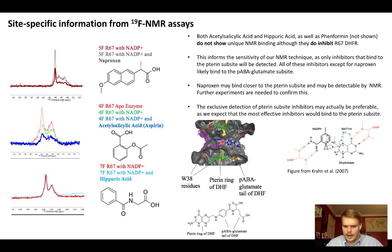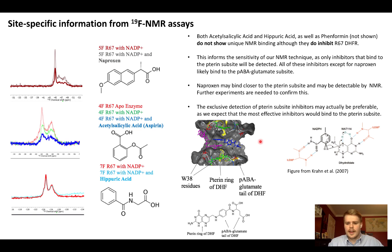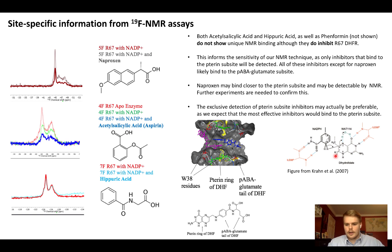The key takeaway is that this NMR method will detect inhibitors in drug screening, but only inhibitors that bind to the pterin sub-site. This could actually be viewed as a positive, because we suspect that inhibitors binding to the pterin sub-site will be better inhibitors. This is due to the isoleucine 68 hydrogen bonding interactions, which have been found to be very important for substrate binding — in contrast to the paba-glutamate tail, which actually flops around in the active site.